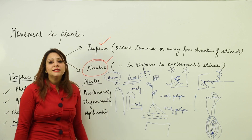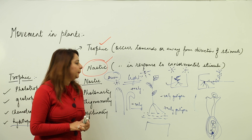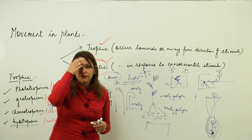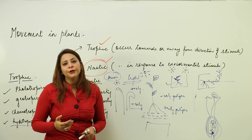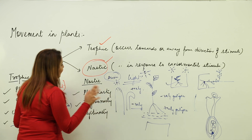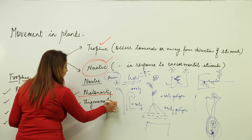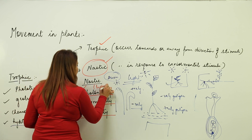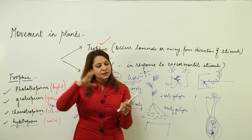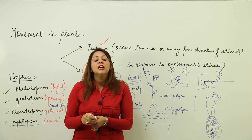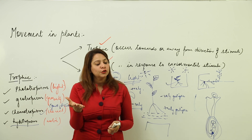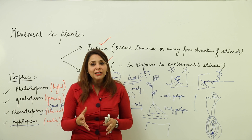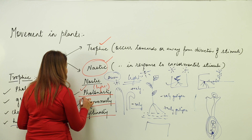Nastic movement is also in response to an environmental stimulus, but its direction is independent of the direction of the stimulus. There are three kinds: photonasty, thigmonasty, and nicknasty. In photonasty, the stimulus is light — when there is sunlight, flowers open up and leaves open, but when there is no sunlight, flowers and leaves close.